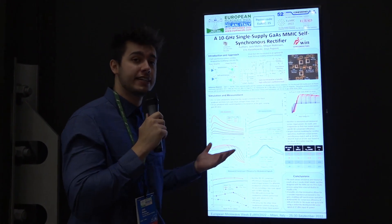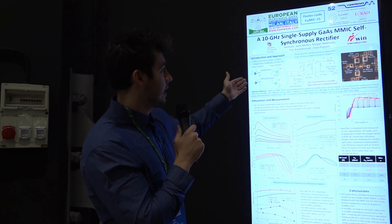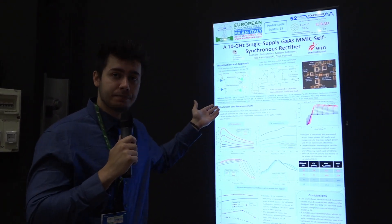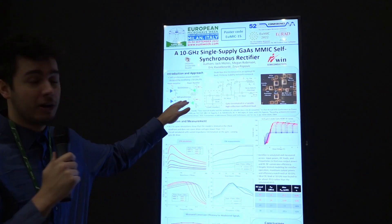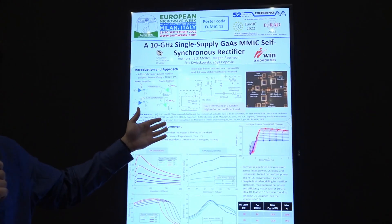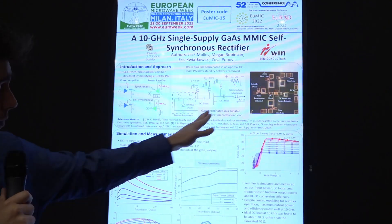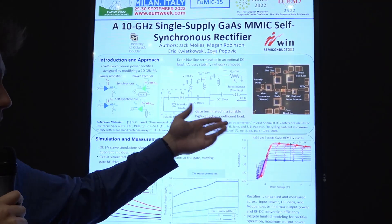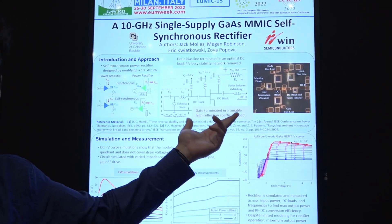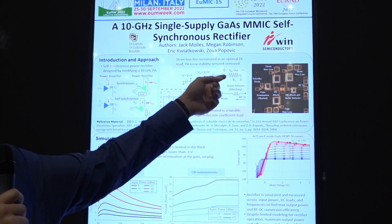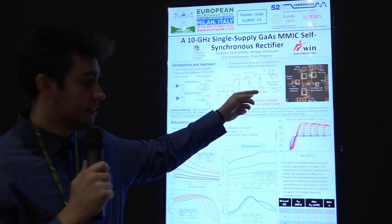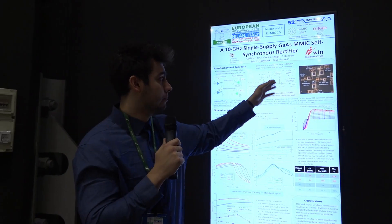The general idea is that we take a power amplifier design and make it into a power rectifier, a self-synchronous one, by essentially taking our normal RF output and using it as our RF input. We get our rectified DC power out from the drain bias line terminated in an ideal DC load.